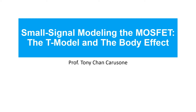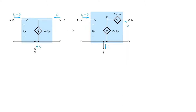In this video, we'll talk about small signal modeling of the MOSFET, specifically the T-model and the body effect. We'll start our discussion with the simplest small signal model we have for the MOSFET, which is the very simple pi model in the top left here. We're neglecting channel length modulation and other effects for now, just to help us arrive at a T-model in the simplest way possible.